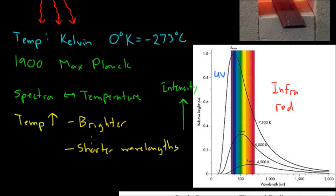So we notice that as temperature increases, the object gets brighter, and the wavelengths that most of the light is being emitted at are at shorter wavelengths.